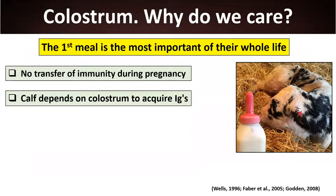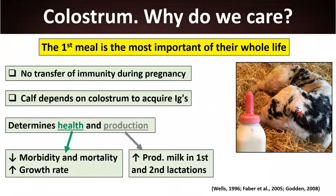Why do we care? Because colostrum is the single most important meal in the whole life of the animal. One key reason is that there is no transfer of immunity during pregnancy due to the nature of bovine placentation, so the calf entirely depends on colostrum to acquire immunoglobulins.